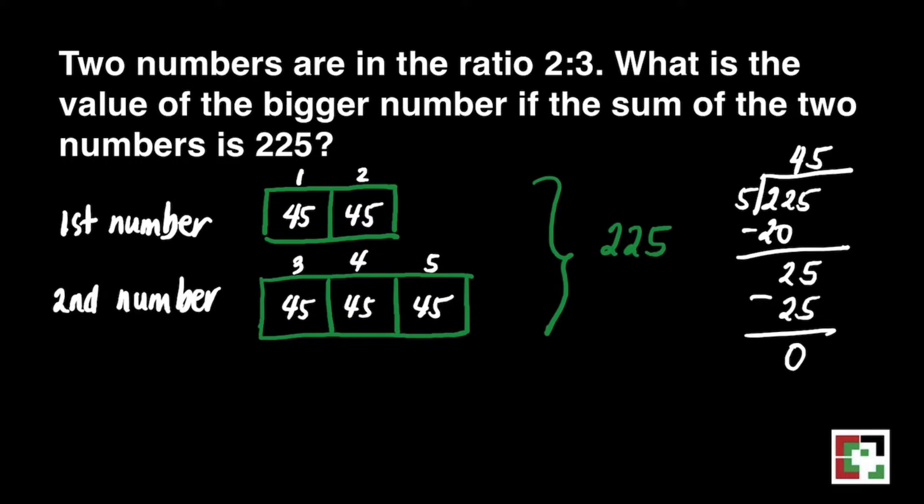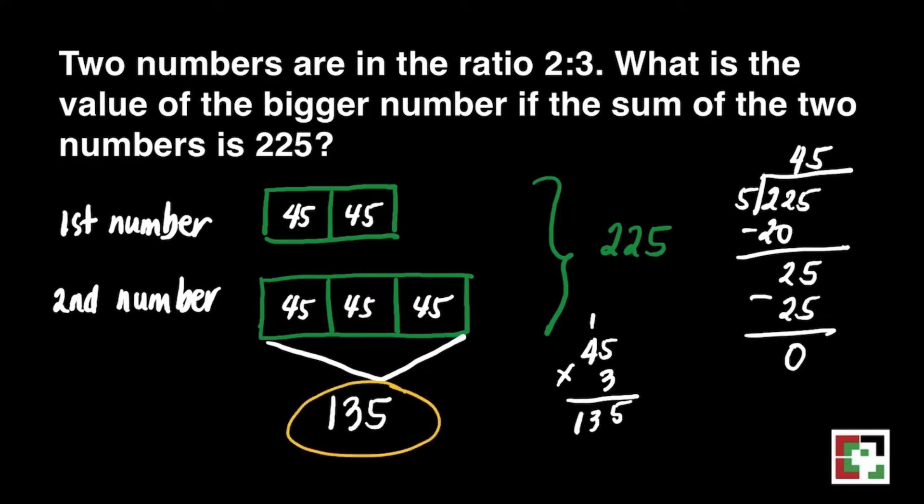And we're looking for the bigger value. How will we know which one has the bigger value? Of course, the one with three boxes. That's 45 times 3 will give us 135. So our answer for this question is 135.